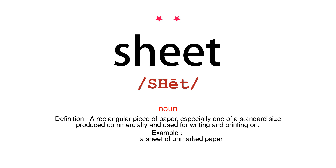Noun. Definition: a rectangular piece of paper, especially one of a standard size produced commercially and used for writing and printing on. Example: a sheet of unmarked paper.